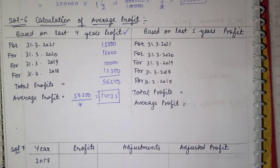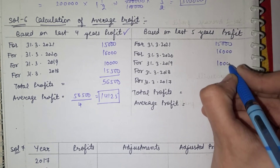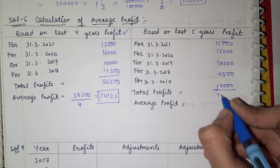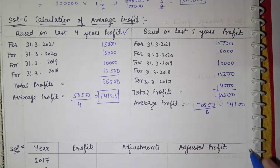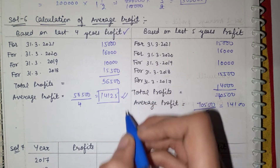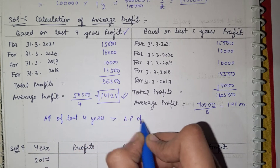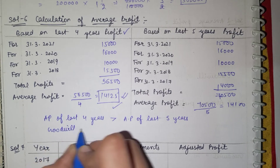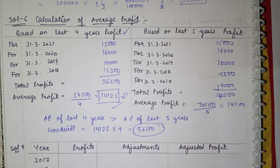Now for the 5-year profit calculation: 15,000; 16,000; 10,000; 15,500; and for 2017, 14,000. The total is 70,500 and dividing by 5 gives an average of 14,100. Comparing both, the average profit of the last 4 years (14,125) is more than the last 5 years (14,100). So we calculate goodwill as 14,125 multiplied by 4, giving goodwill of 56,500.